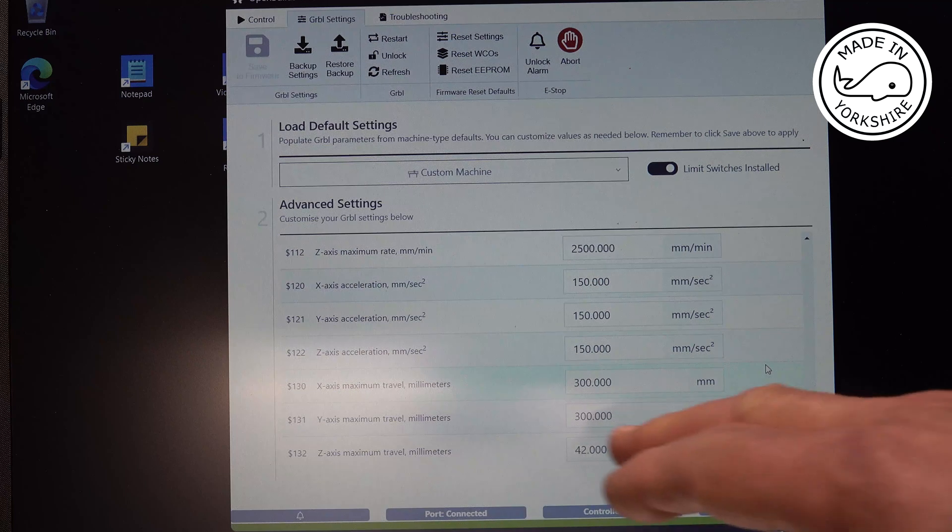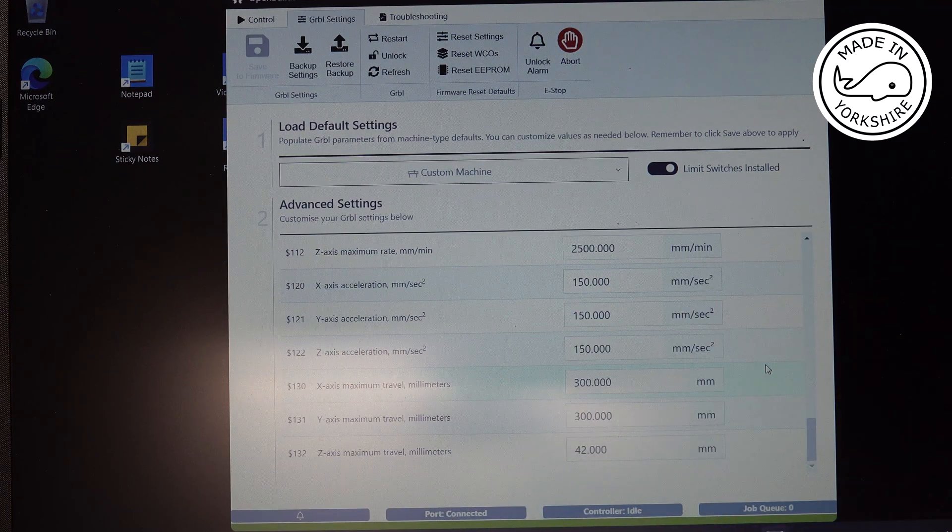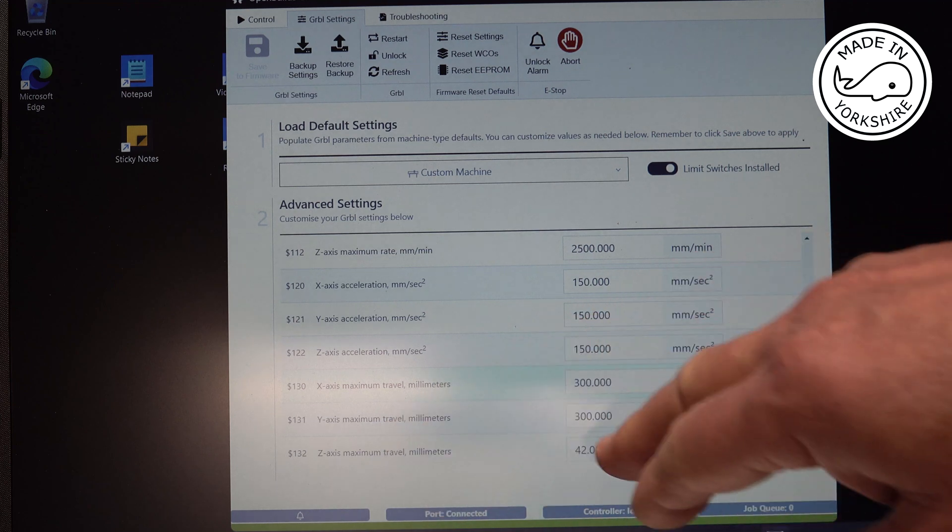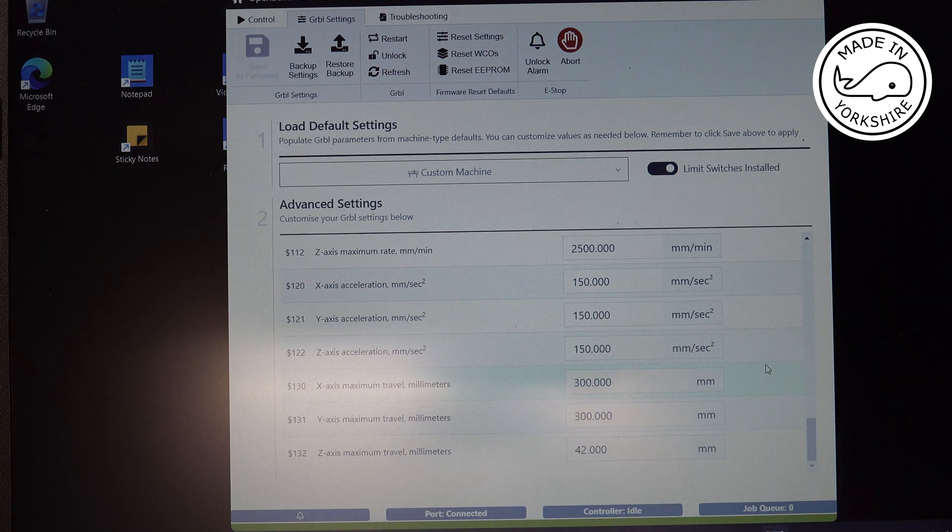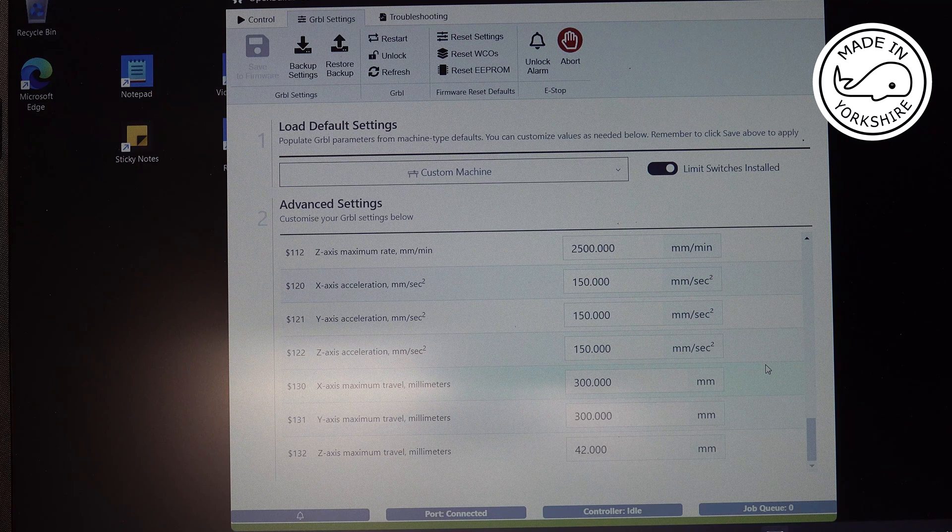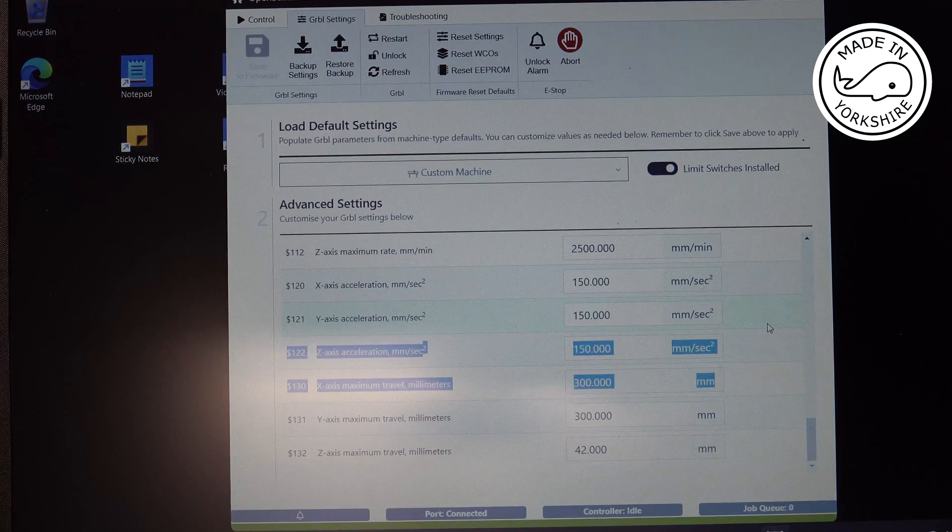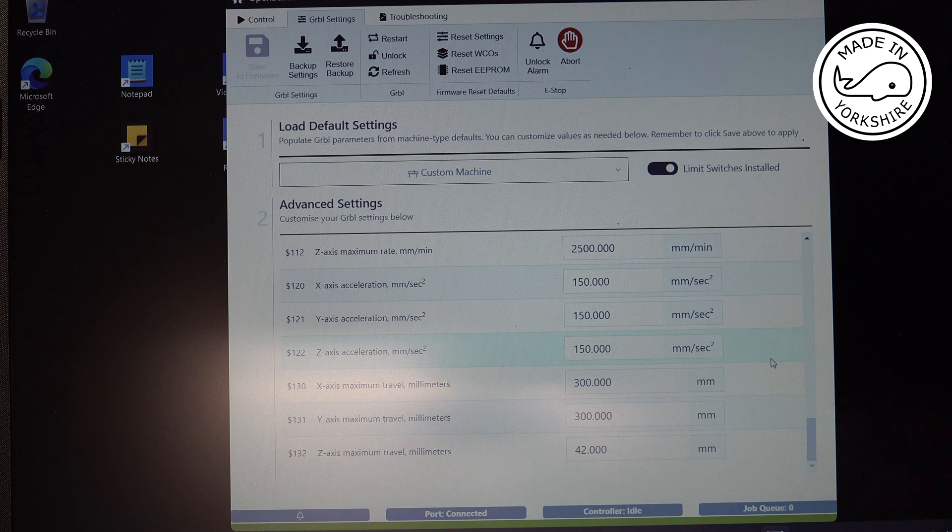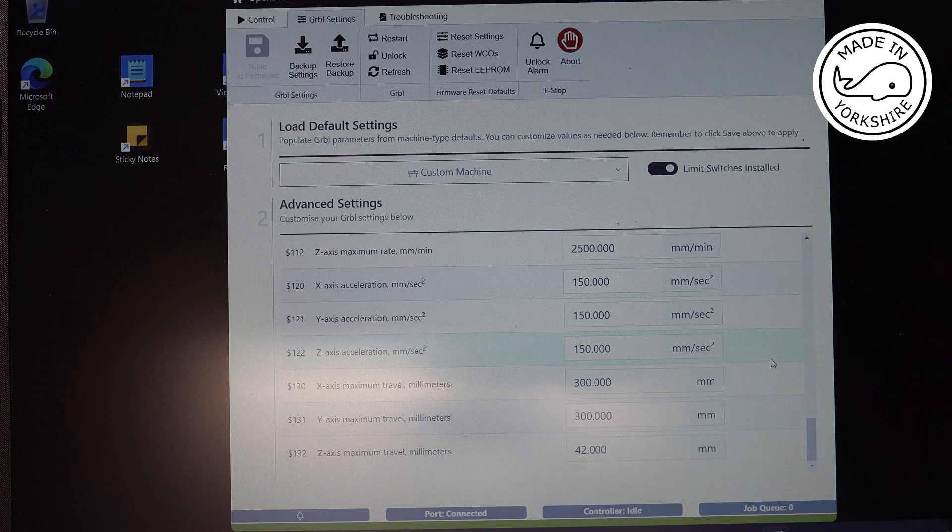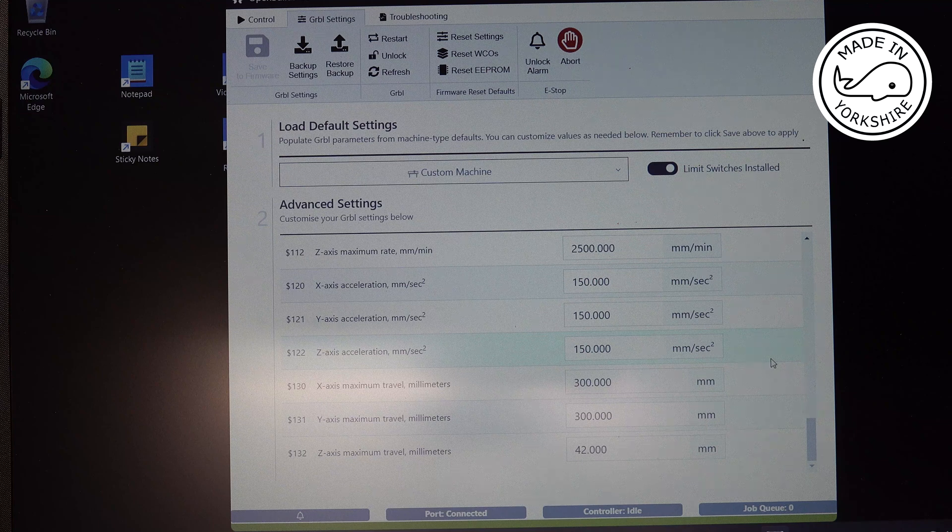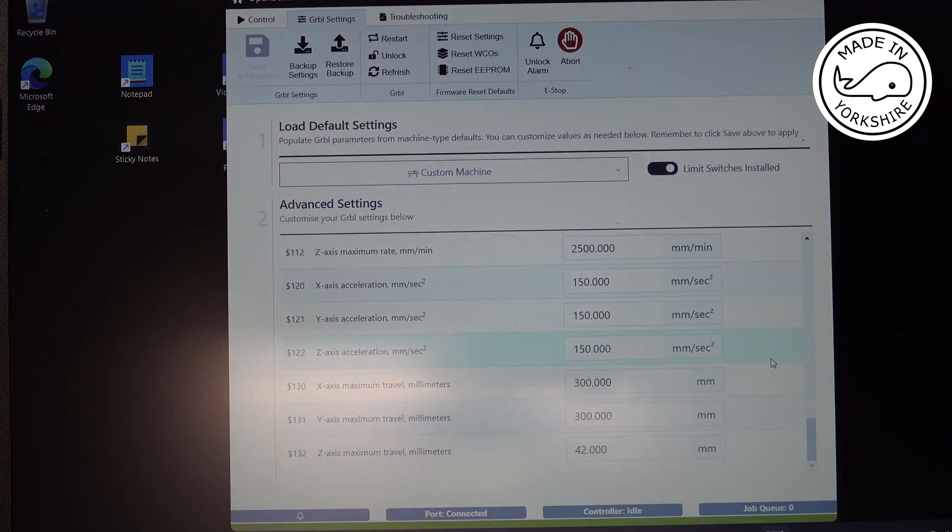Now, what I also did for soft limits is on the X axis, I worked out that it's just over 300 millimeters of travel. So I put 300 in there. Also, the Y axis is just over 300. So I put 300 in there. And the Z axis is about 45, I think. So I put 42 in there. And the advantage of having soft limits is if my limit switches on the far end of the axis were to fail, then you wouldn't even get there because the soft limits are going to kick in before it even touches any of the far end switches. So like I say, a bit of belt and braces.